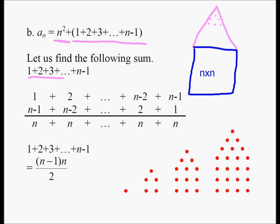Now, we're going to use Gauss's technique to find the sum of these numbers. One plus two plus three plus dot dot dot plus n minus one. We're going to write the first line as it is. And the second line will be the first line in the reverse order. We can easily see that each pair will add up to n. And I have a bunch of n's on my line three.